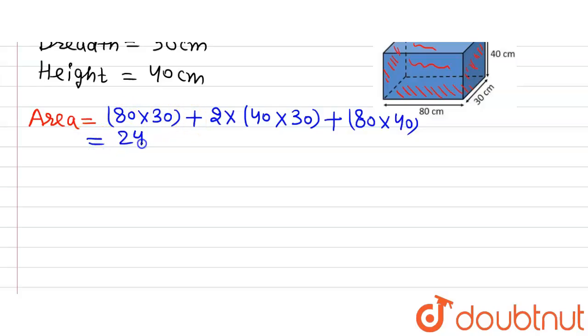So this will be equal to 80 into 30 is 2400 plus 2 into 40 into 30 is 2400 again plus 80 into 40 is 3200. Now further solving it, we will get 2400 plus 2400 plus 3200. So we will get the area is 8000 centimeter square.